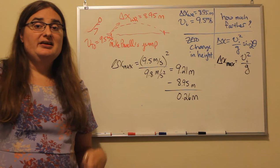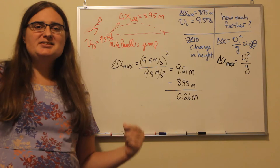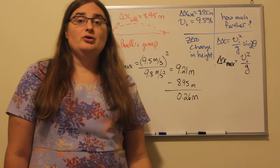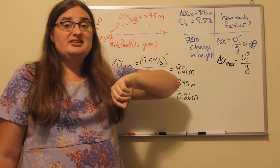If we want to get the maximum possible distance with an initial velocity of 9.5 meters per second, we would want to launch ourselves at as close to a 45 degree angle as we could. Because 2 times 45 degrees makes the sine of 90 degrees equal to 1.